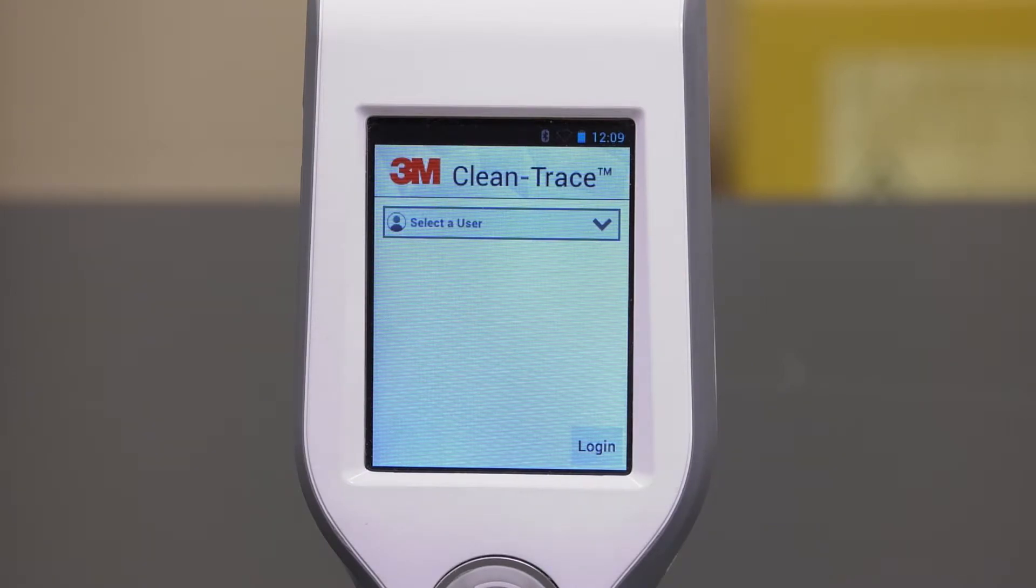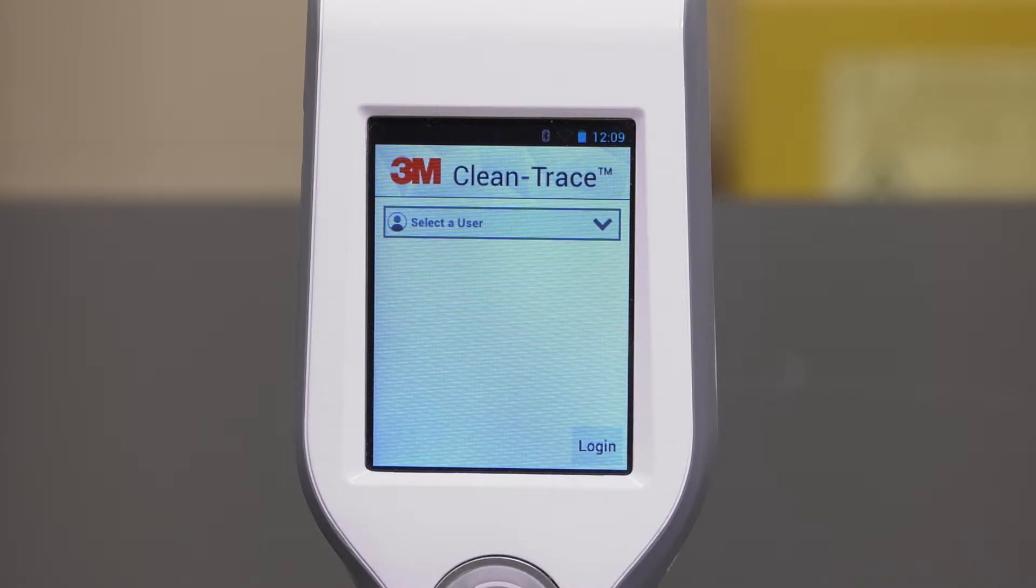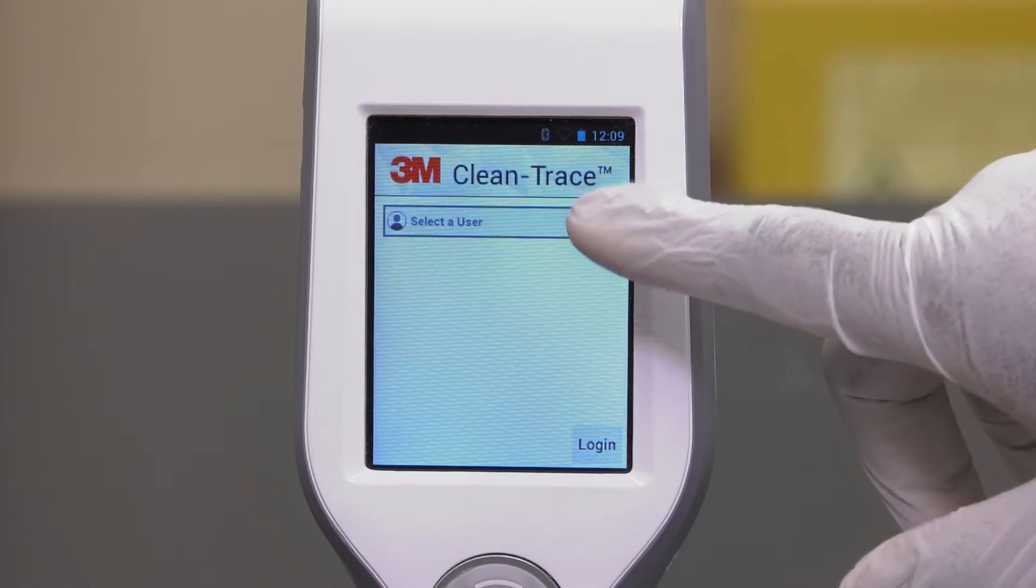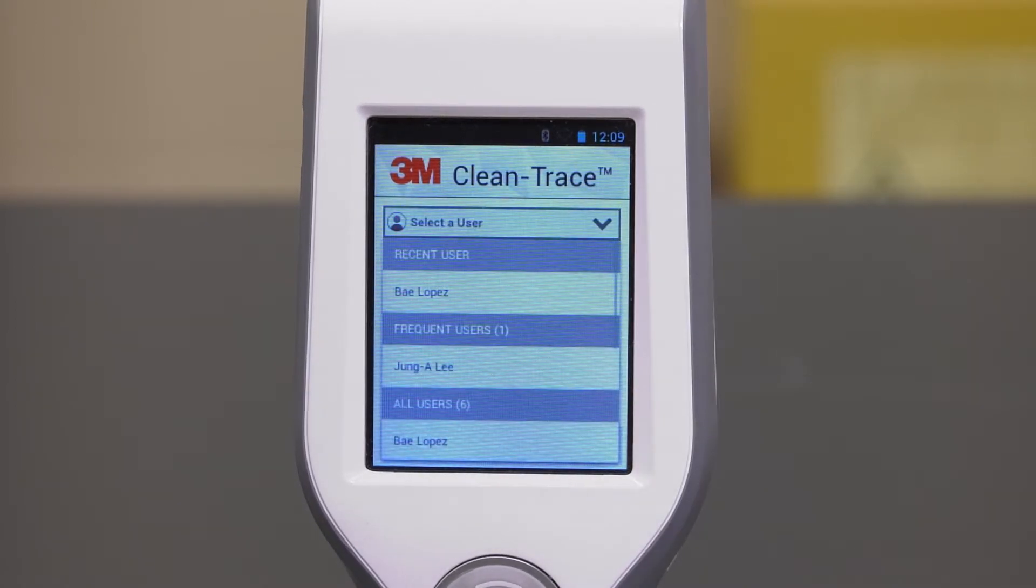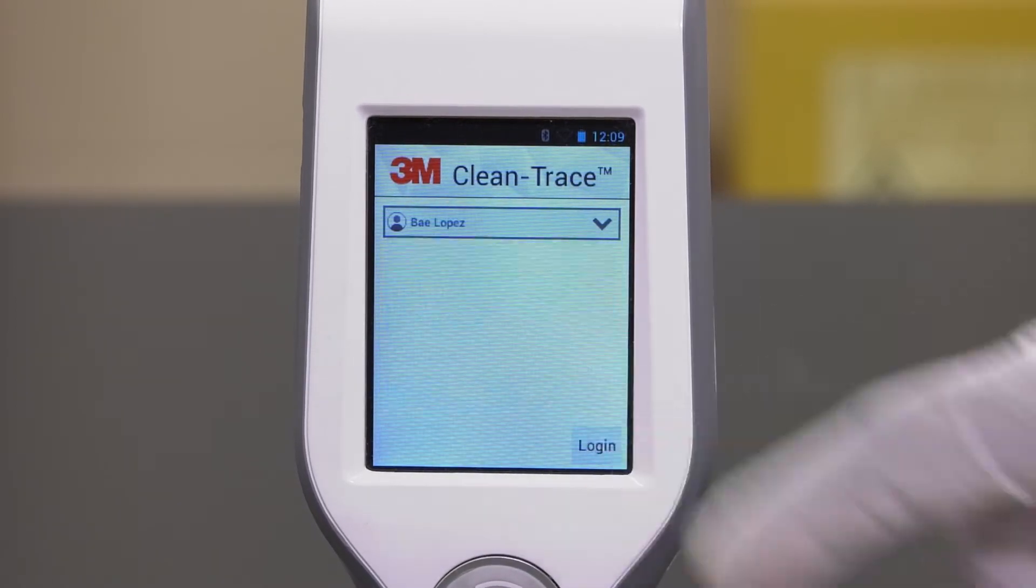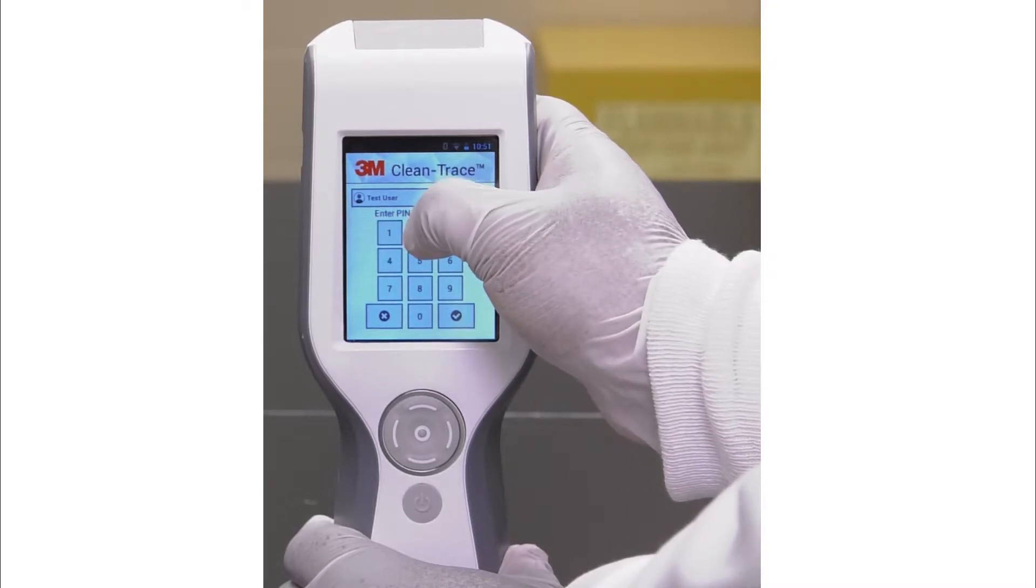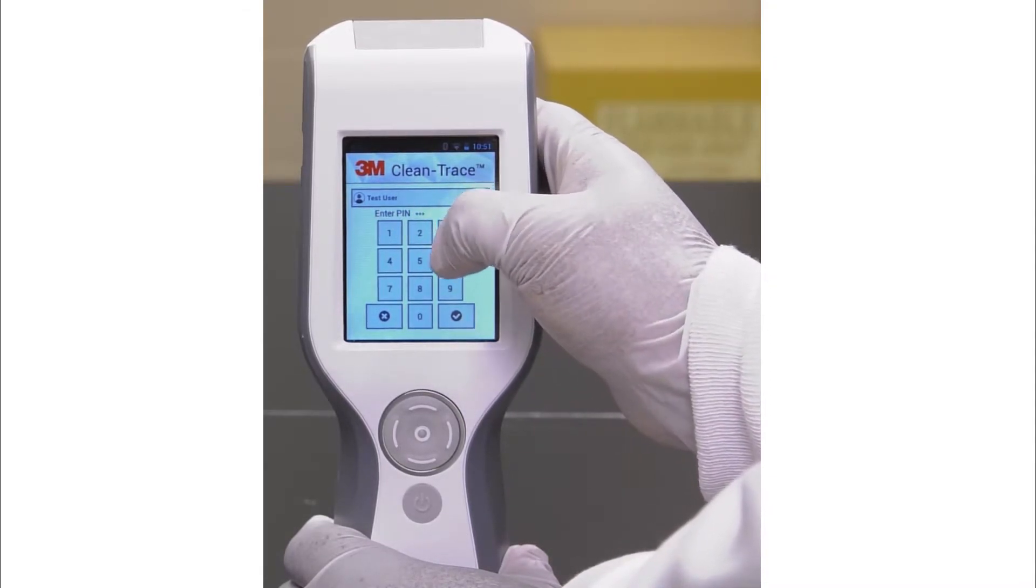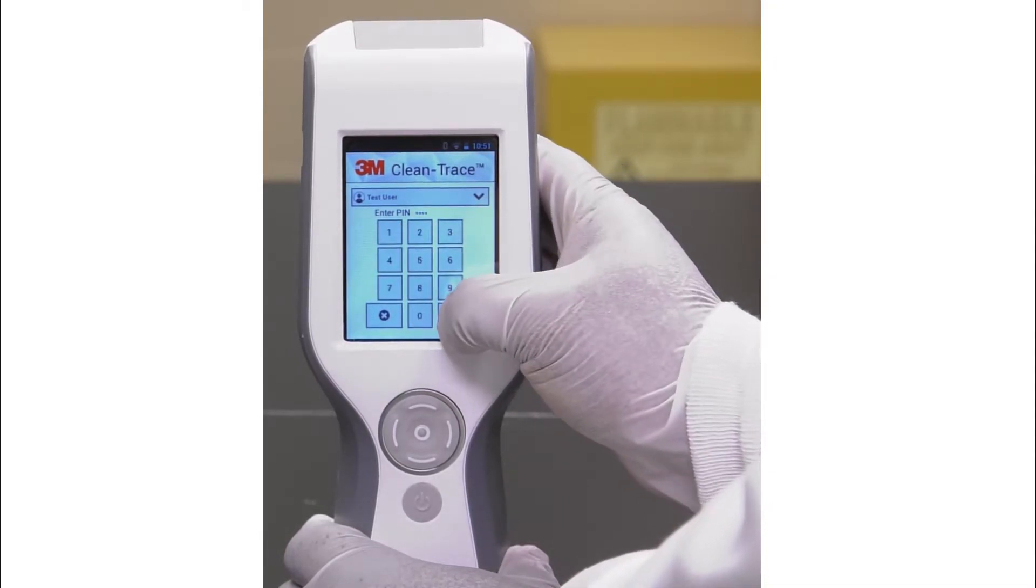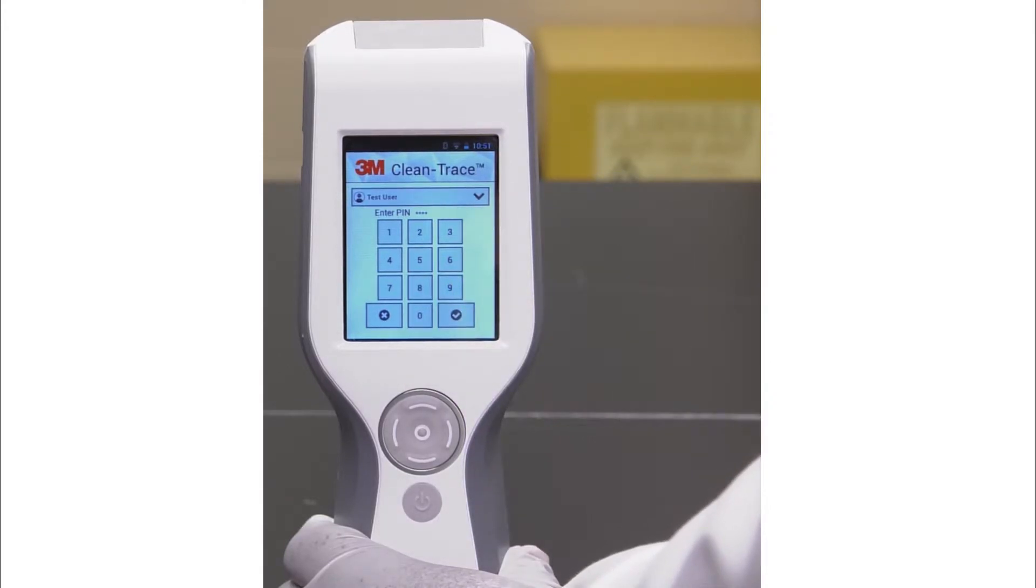If your username was already set up through the 3M Cleantrace hygiene management software, you can select your username by tapping select user and then tapping your username. In this case, Bay Lopez. If the PIN code is enabled, enter your four digit PIN number and tap the checkbox in the lower right corner. You may request the default user's PIN code through the online support form or through your 3M representative.